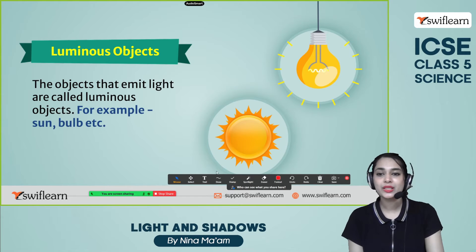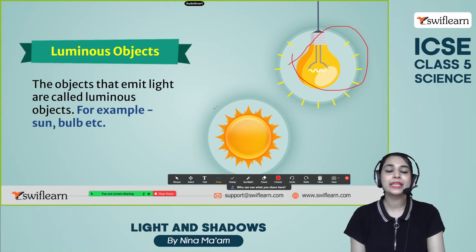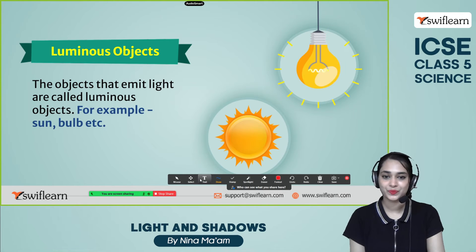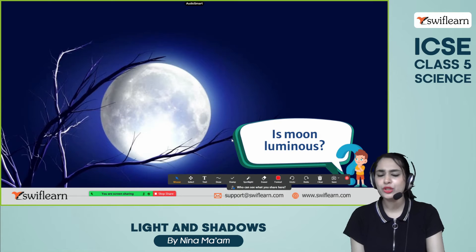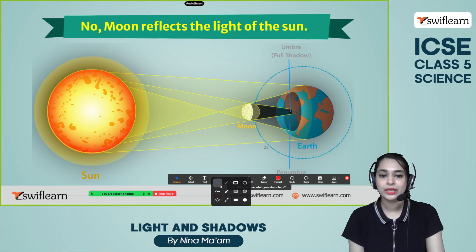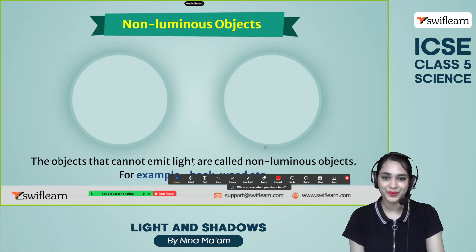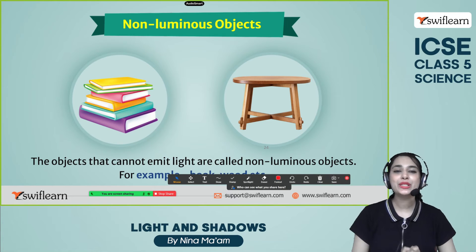Now we are going to learn about luminous objects. Look at this bulb — it is a luminous object. Objects that emit light are called luminous objects, such as the bulb, sun, and candles. Is the moon luminous? Definitely not, because the moon reflects the light of the sun. You can see: the moon is in the middle, with the sun on one side and the earth on the other. So the moon reflects the sun's light — it is not luminous and cannot emit light on its own.